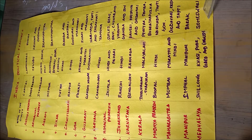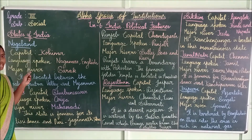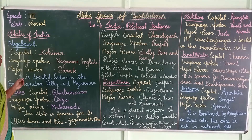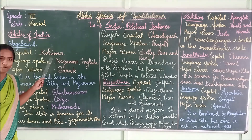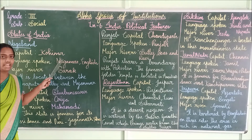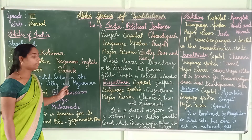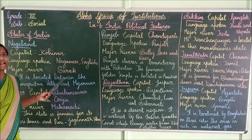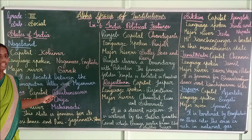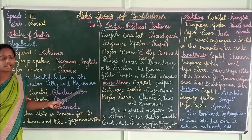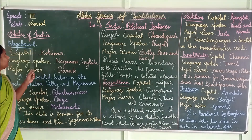Now we are going to see some more states in this video. The next state is Nagaland. Its capital is Kohima, spelled K-O-H-I-M-A. The language spoken in Nagaland is English. Its major river is Barak, and it is located between the Brahmaputra river and Myanmar.